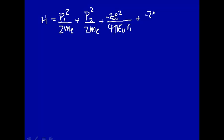And there was a minus 2e squared over 4πε₀r₂, the second electron, and then we had that interaction term, e squared over 4πε₀ times the distance between the two electrons.